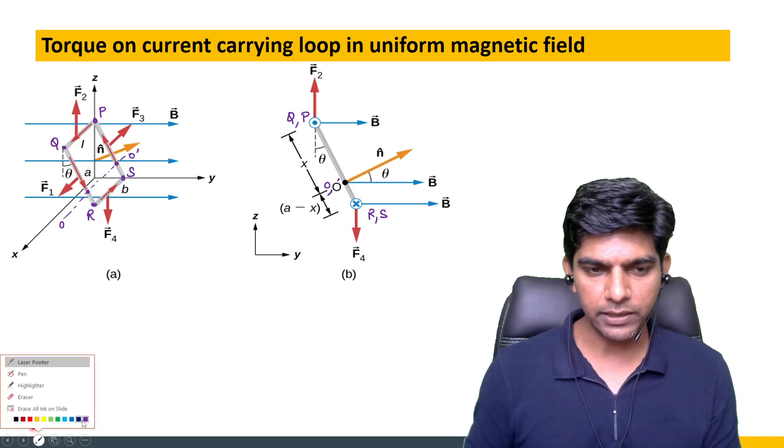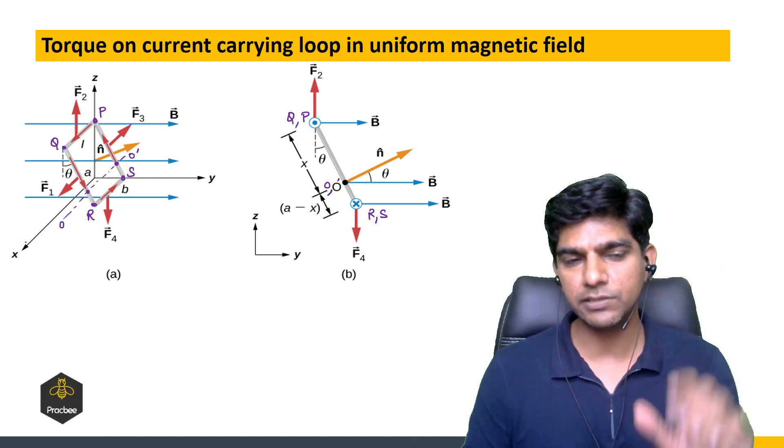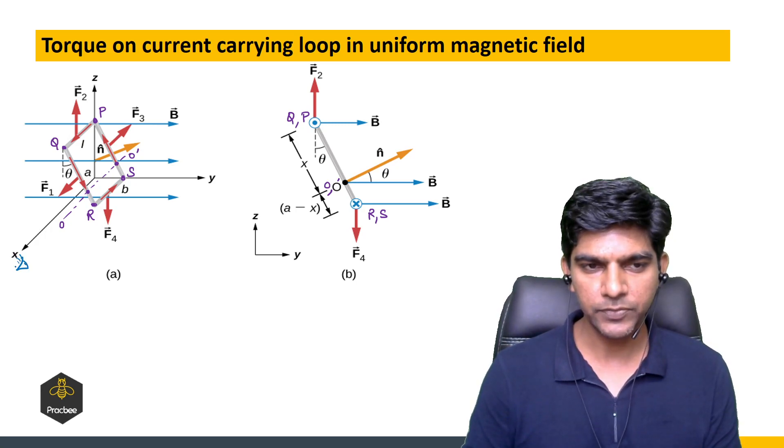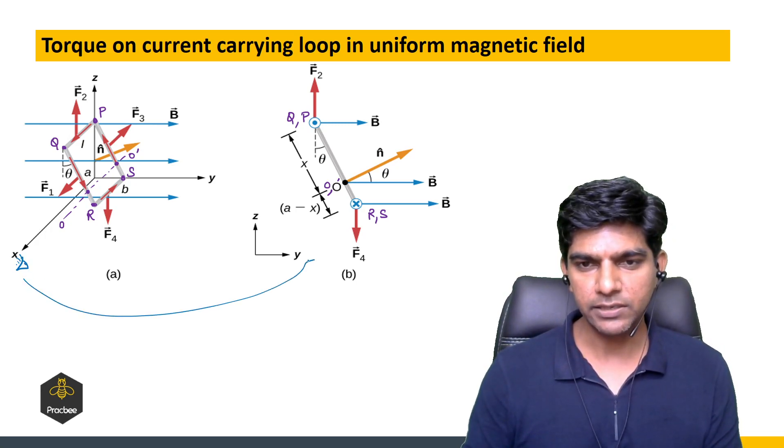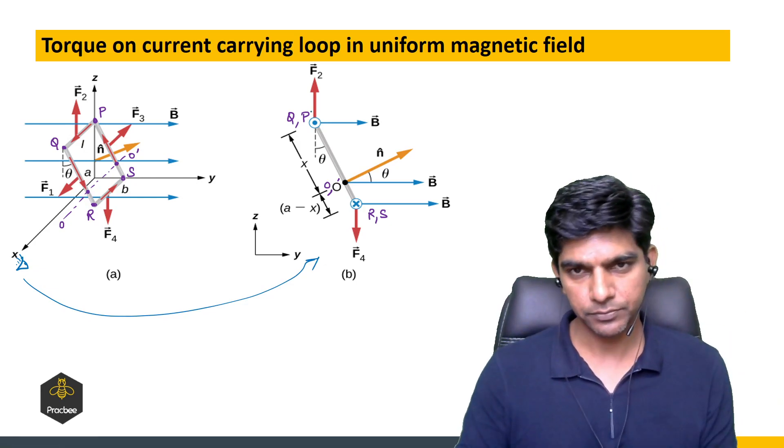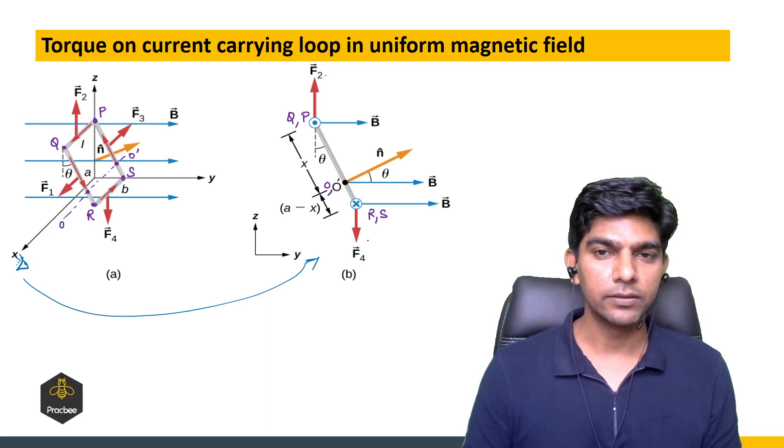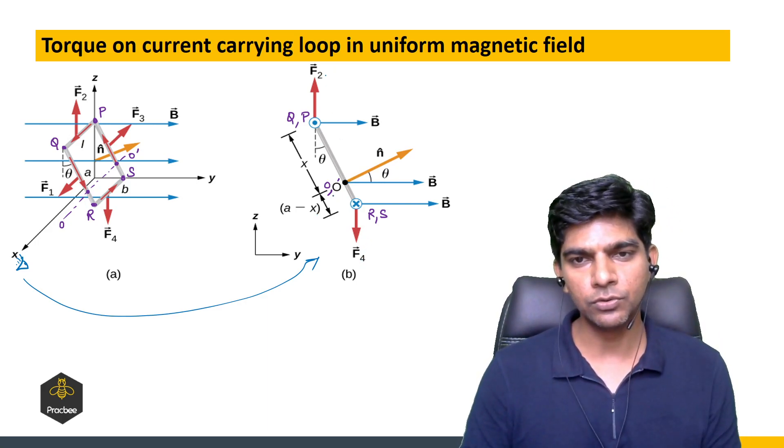If we visualize this problem, if you see this loop from the positive x-axis, you will see something like this diagram. Here F2 and F4, their line of action is not passing through the axis of rotation OO prime.